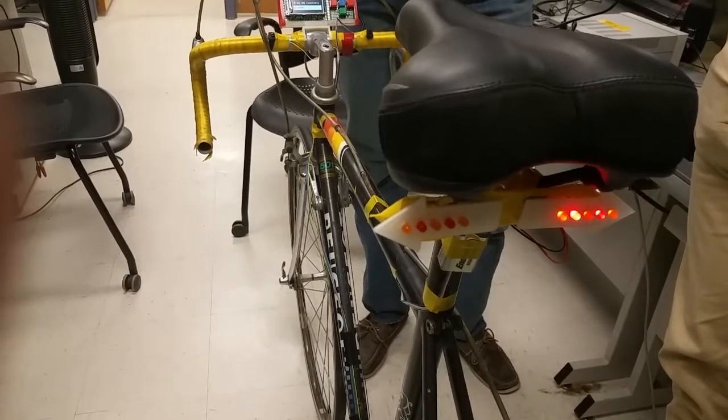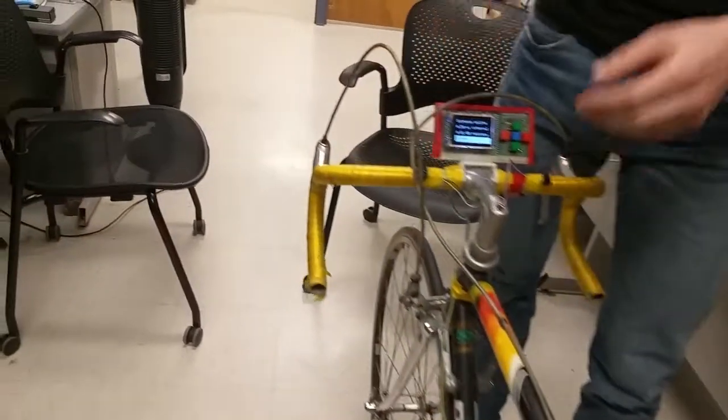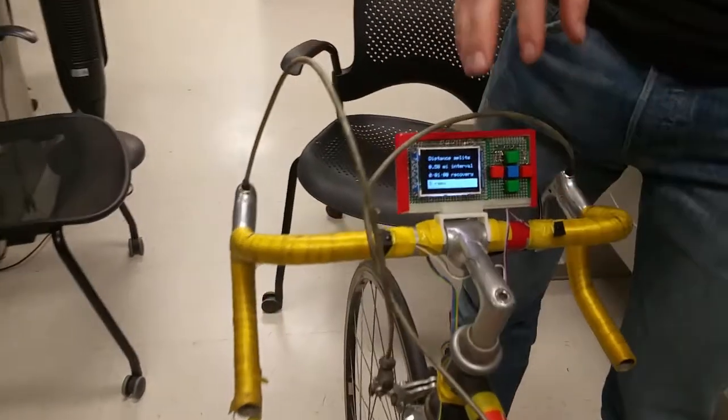And they use 555 timers to illuminate a blink. And this is just a separate system from the actual bike computer, which is on the back.